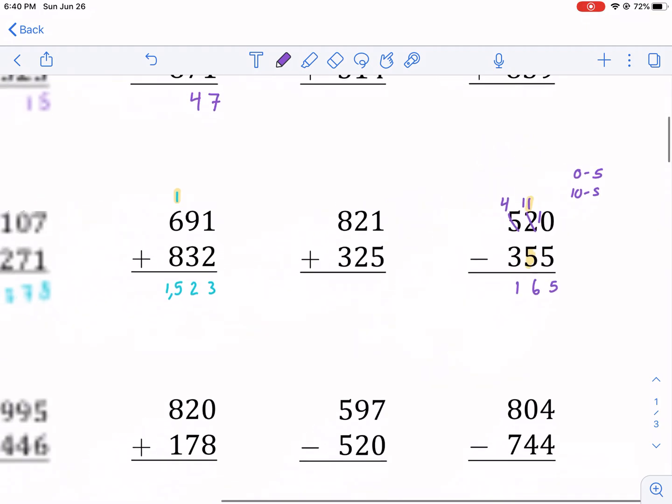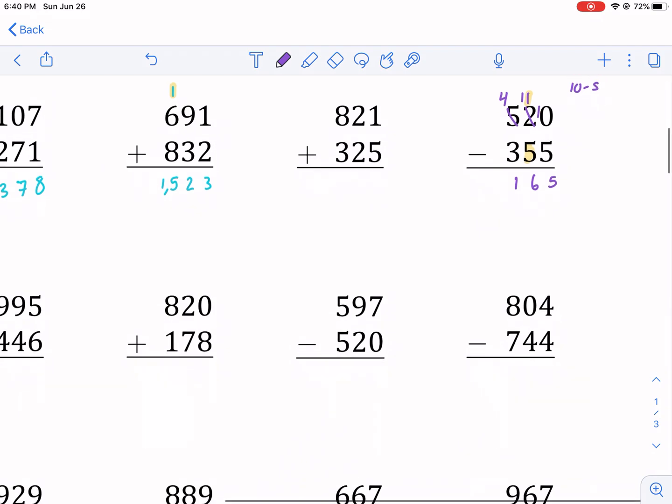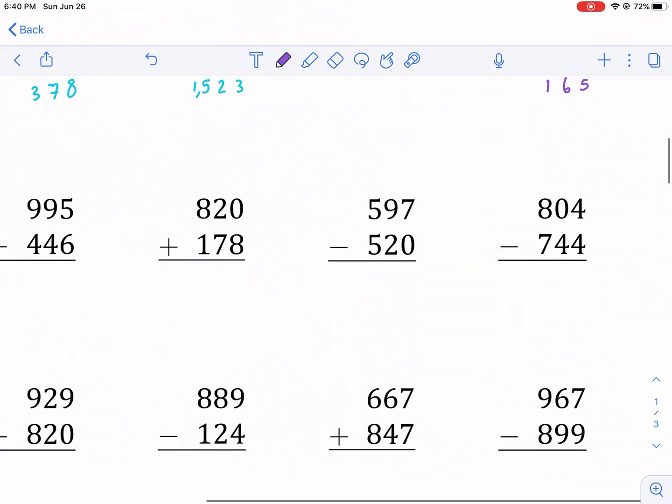What I was getting at is there are some cases where you'll have to borrow twice. I don't know if there's any in this worksheet. I'm not seeing off the top of my head. It's usually when there's a 0. That one's not a borrow twice one, though, I don't think. So we'll just do this one.